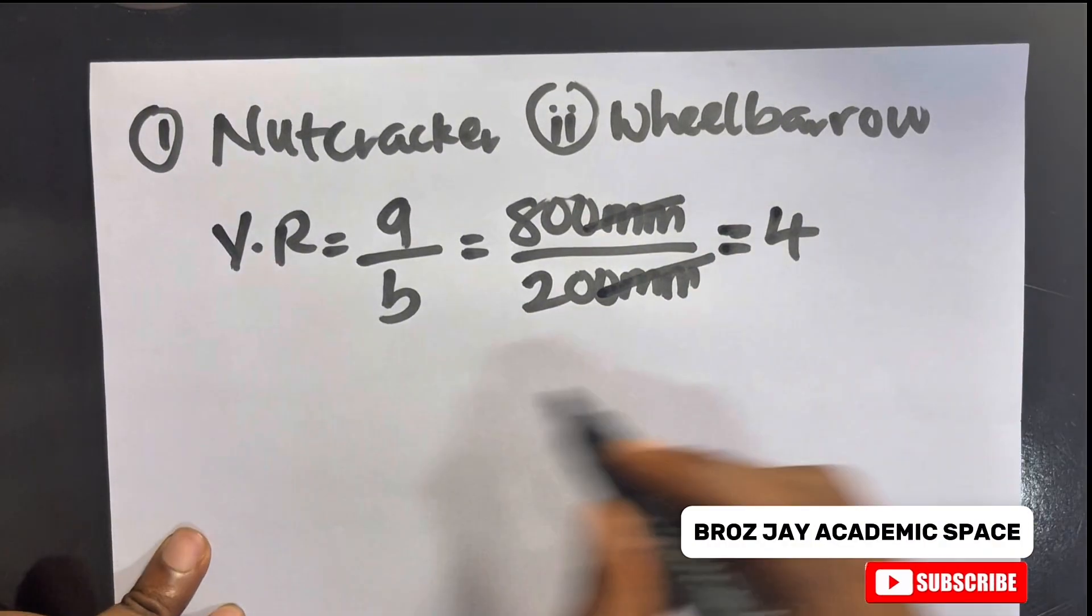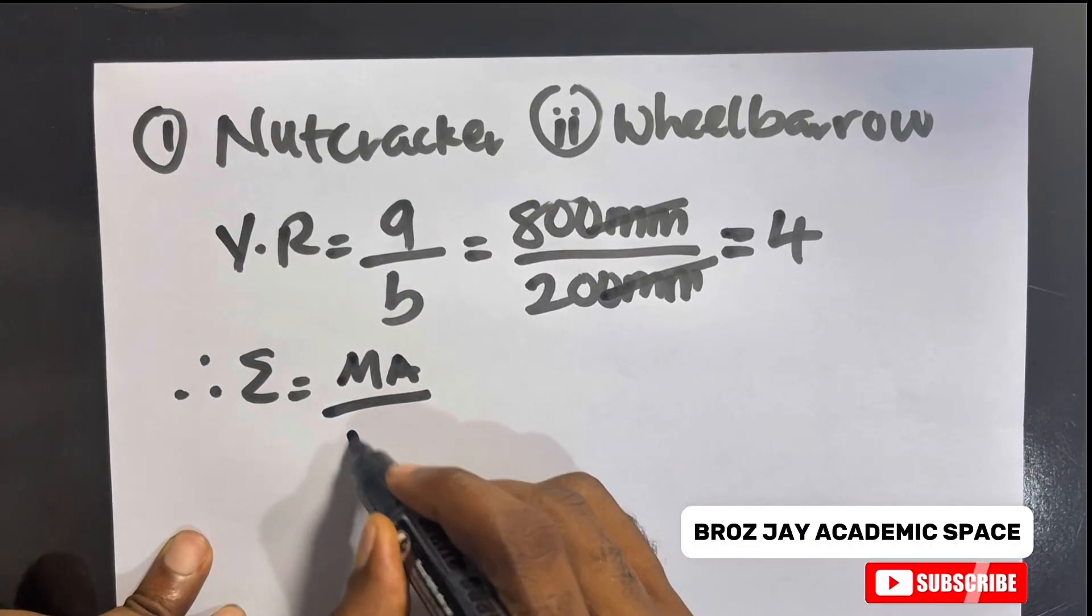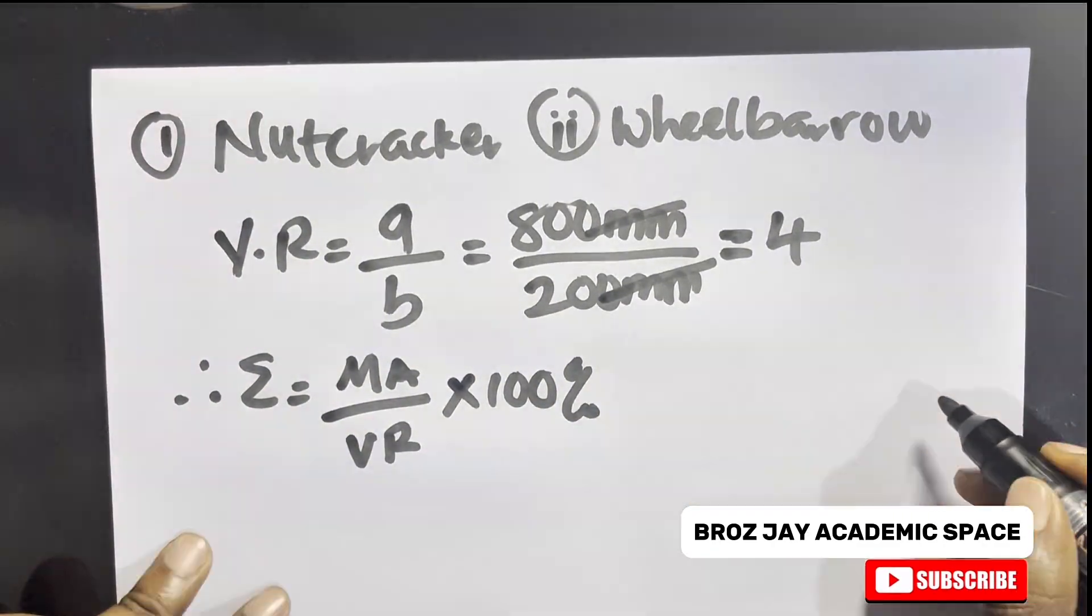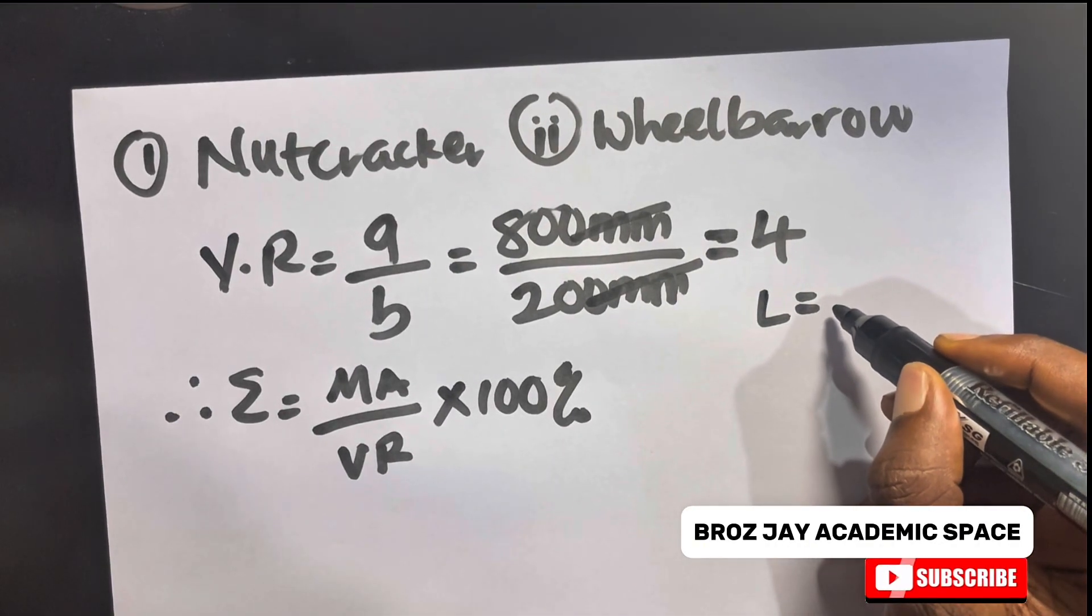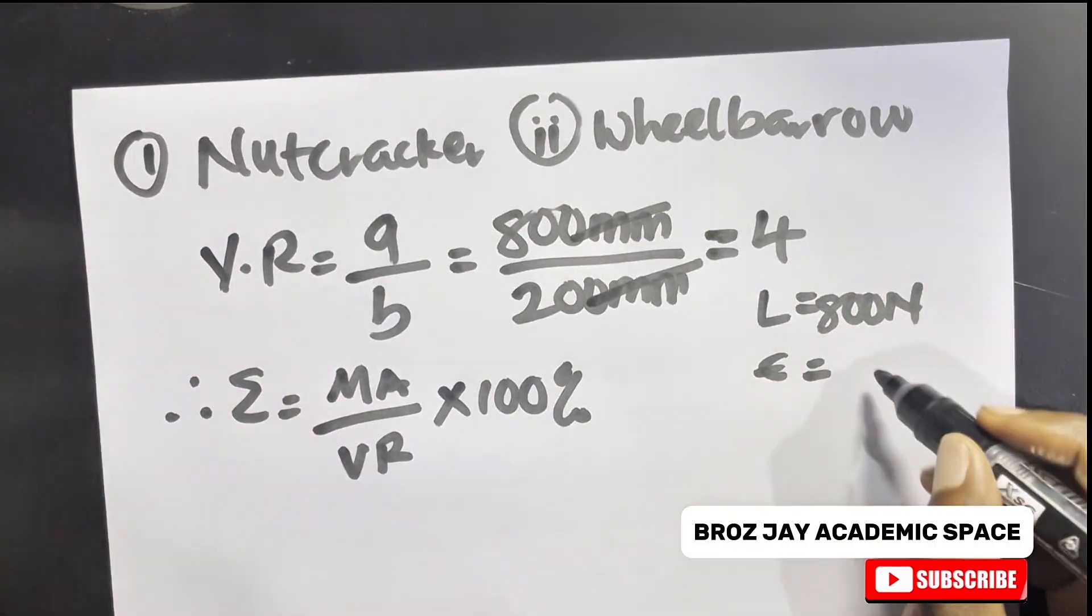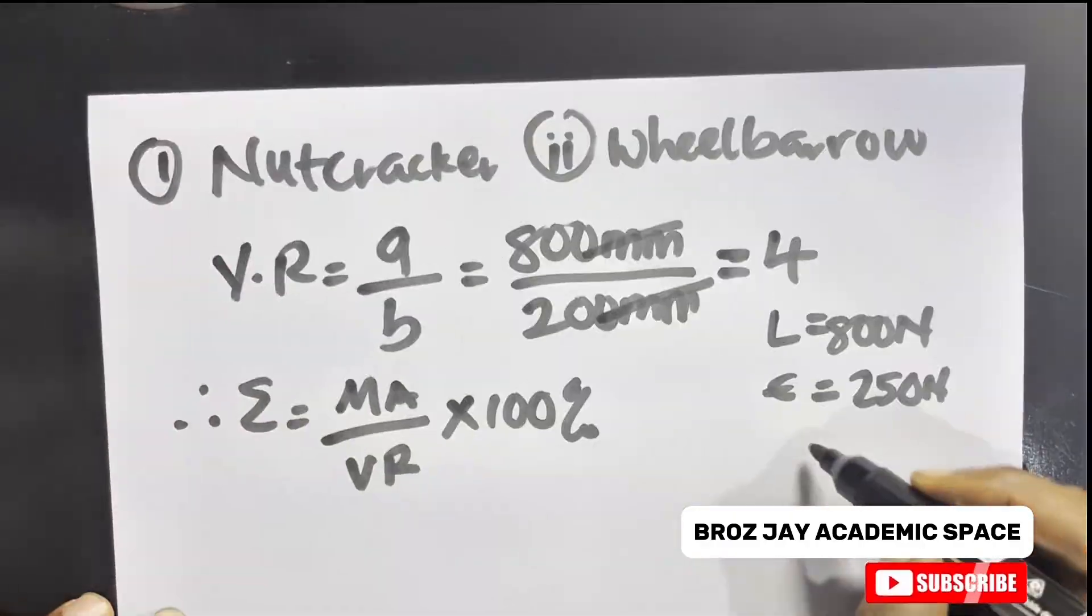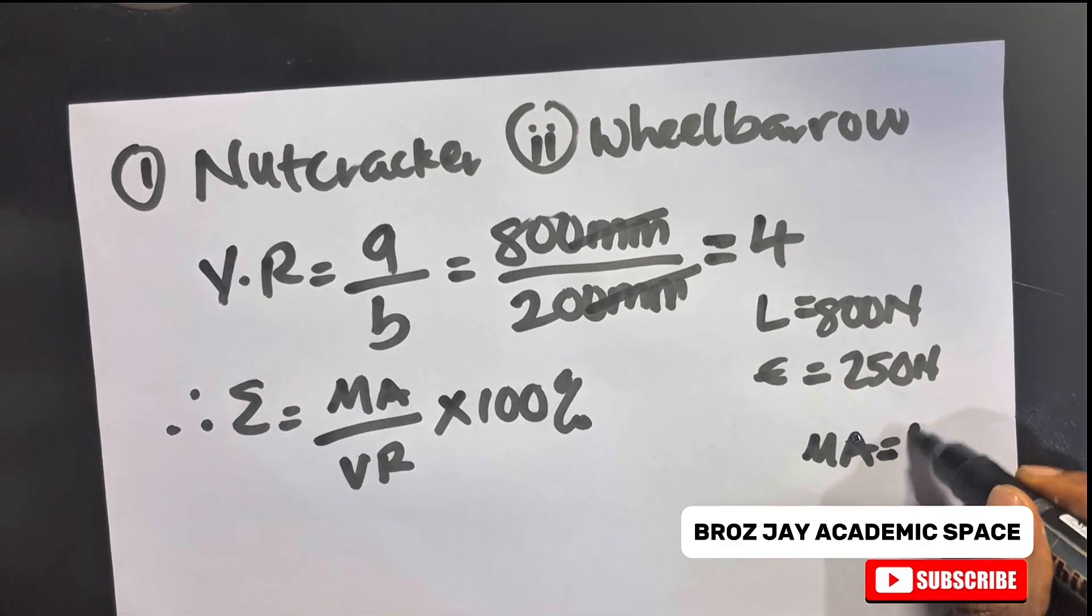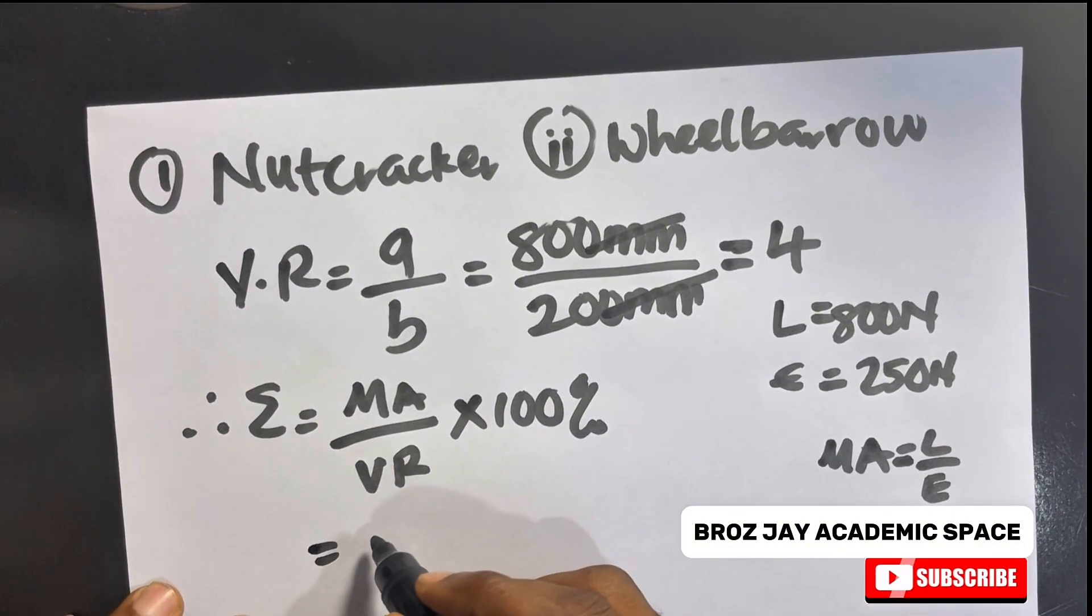Recall that efficiency equals mechanical advantage over velocity ratio times 100%. In this equation, our load was 800 N, our effort to carry the weight was 250 N. Our mechanical advantage, we're not given, but recall that mechanical advantage equals load over effort.